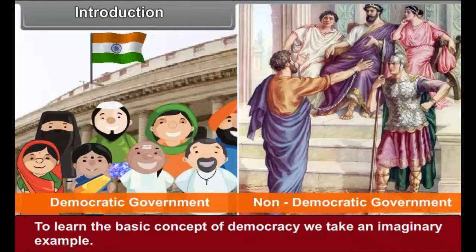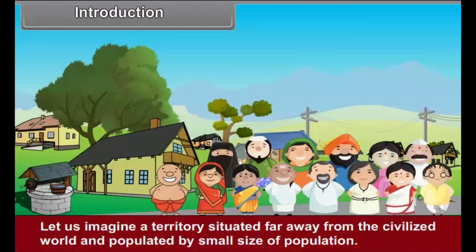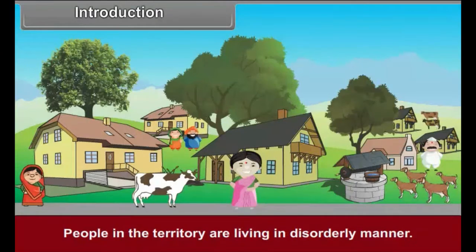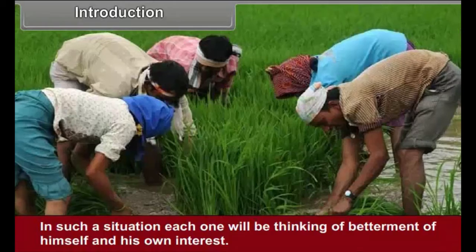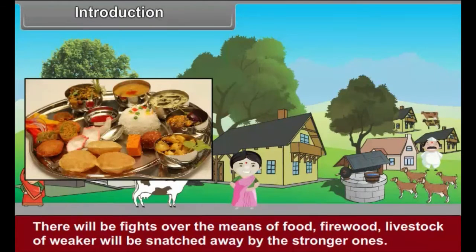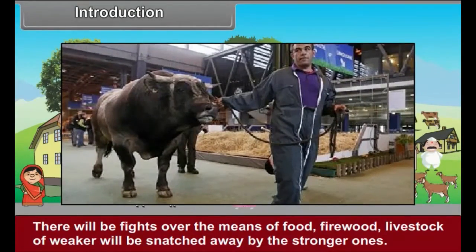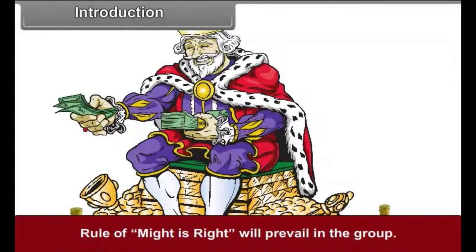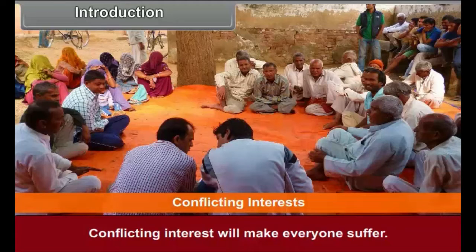To learn the basic concept of democracy, we take an imaginary example. Let us imagine a territory situated far away from the civilized world and populated by a small size of population. People in the territory are living in a disorderly manner. Each one will be thinking of betterment of himself and his own interests. There will be fights over the means of food, firewood, and livestock of the weaker will be snatched away by the stronger ones. The rule of might is right will prevail in the group.